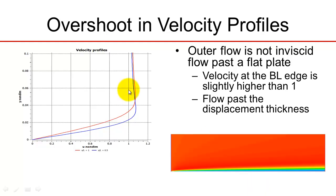It turns out that the overshoot and the velocity profiles that you see is a real effect that you get by solving the Navier-Stokes equations with Fluent — one that is missed by boundary layer theory. So let's explain the overshoot.